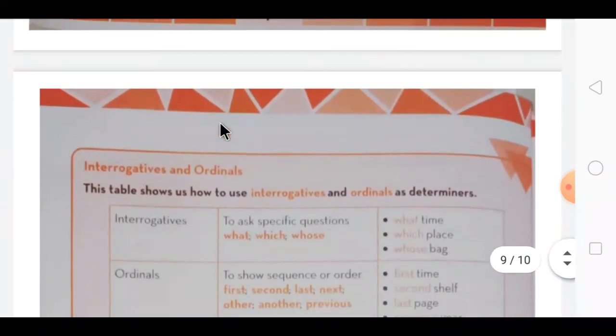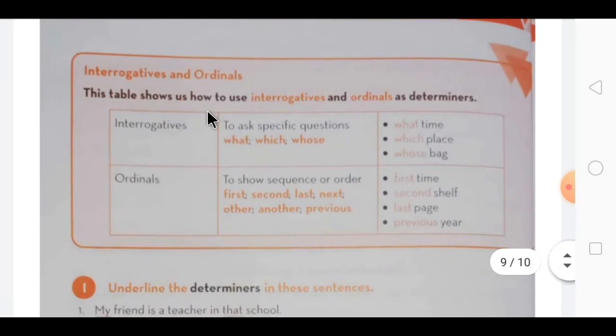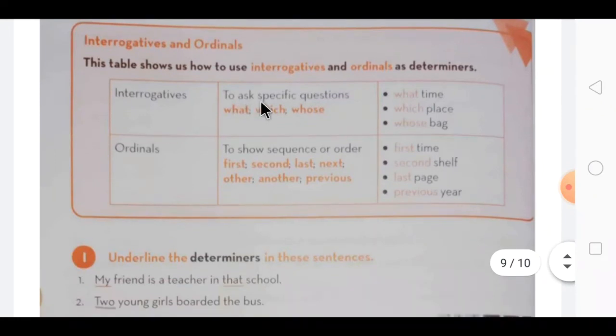Now the next one comes, interrogative and ordinals. Next which is there is interrogative. From interrogative itself you can understand that these will be question words. So in this interrogative, we use these words to ask specific questions. The words used to ask questions are called interrogatives - like what, which, whose. All these wh words are called interrogatives.